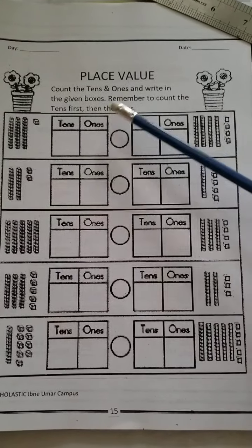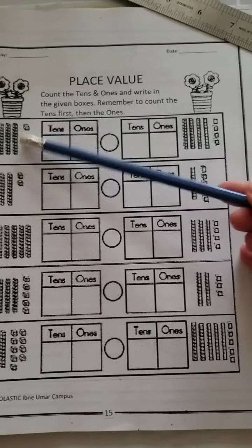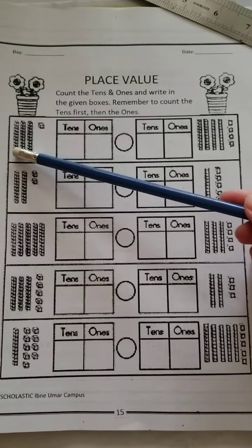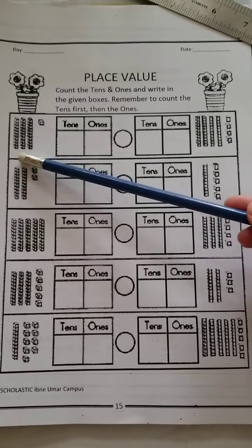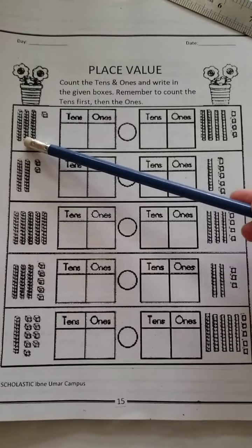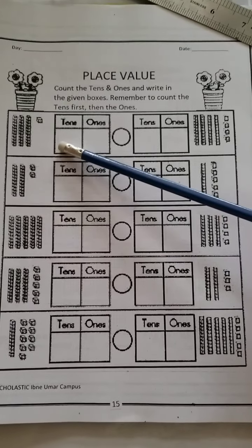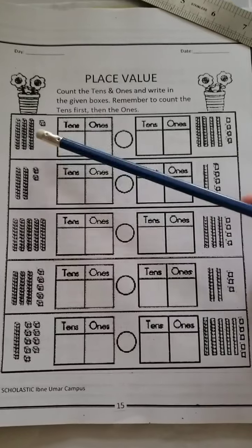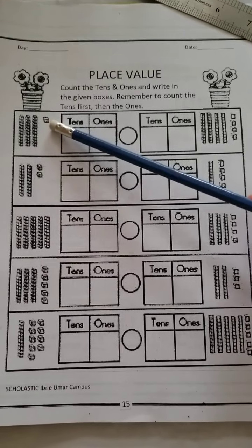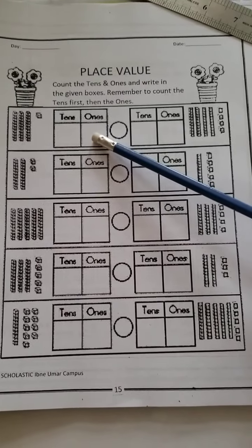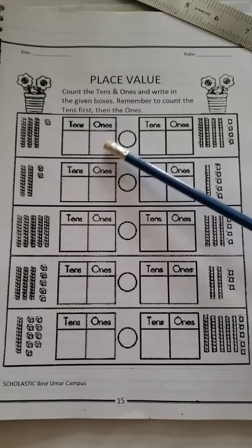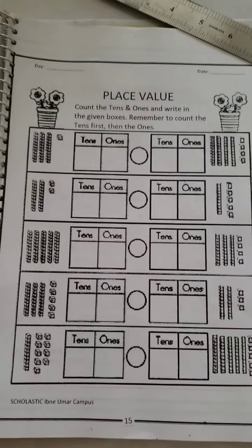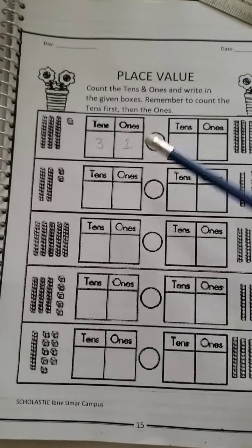Now let's check your second page, page 15 in the workbook. Look at this. You just have to write down tens and ones, nothing else. Count the tens and ones and write in the given boxes. Remember to count the tens first, then the ones. So first you will count the tens. Let's count: one, two, three. So these are how many tens?